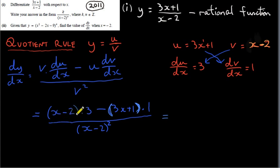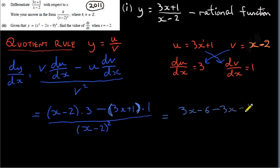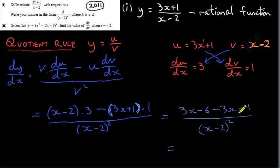We multiply 3 into the first bracket: 3 times x gives 3x, and 3 times minus 2 gives minus 6. Then we multiply 1 into the second bracket, but we have to subtract what's inside: minus 3x and minus 1. This is all divided by x minus 2 squared. Simplifying the numerator: 3x minus 3x is 0, and minus 6 minus 1 is minus 7.